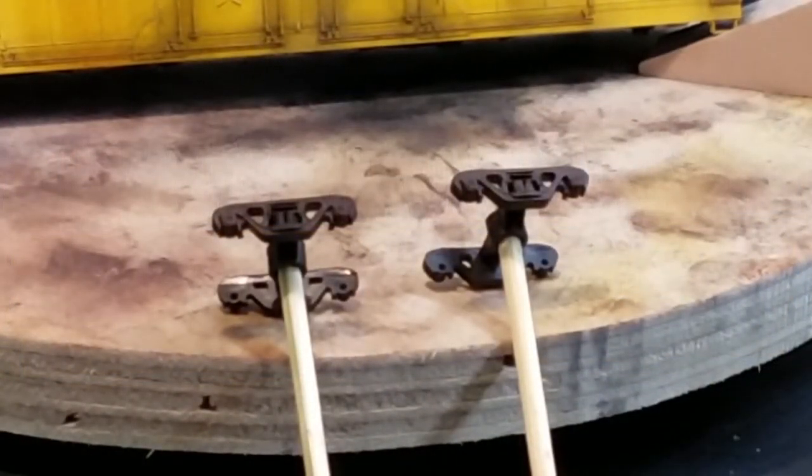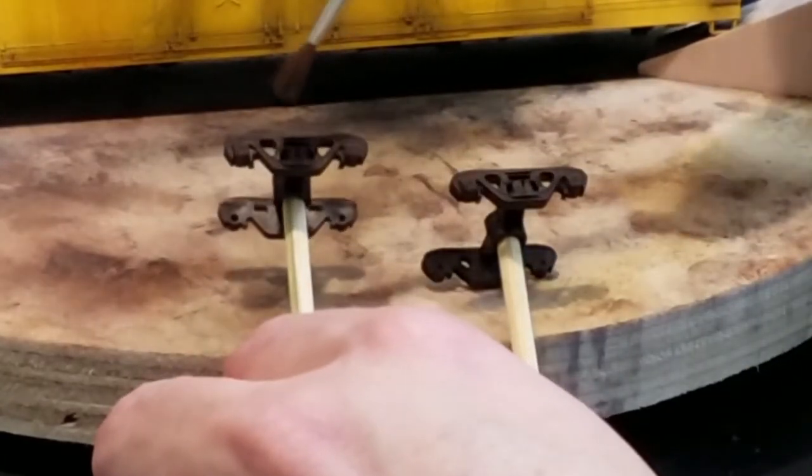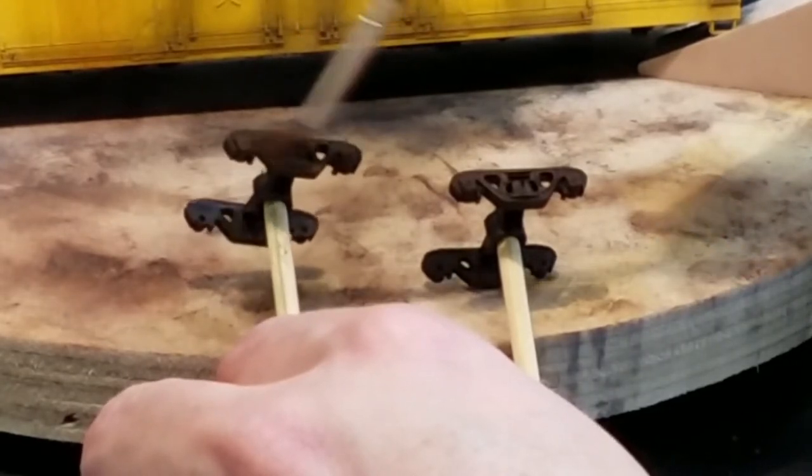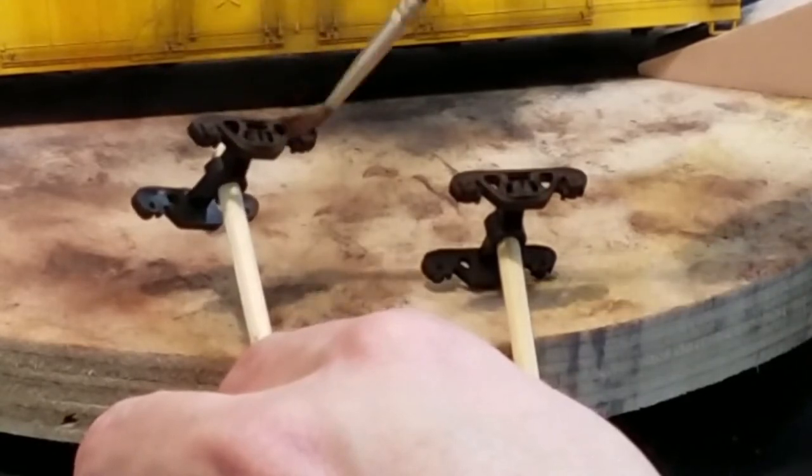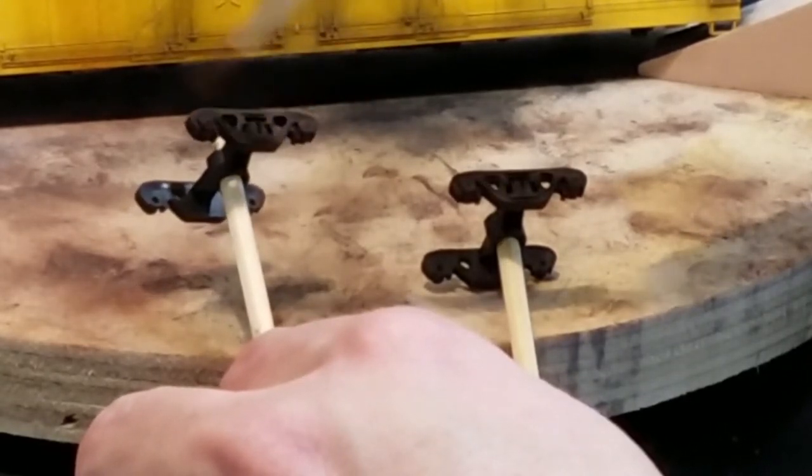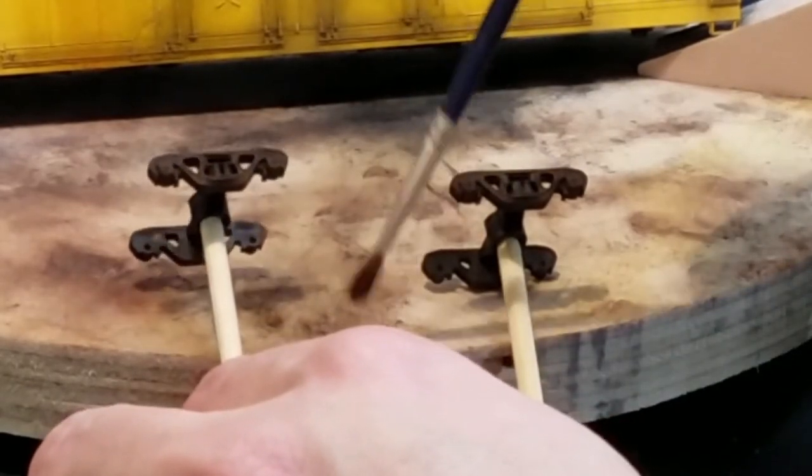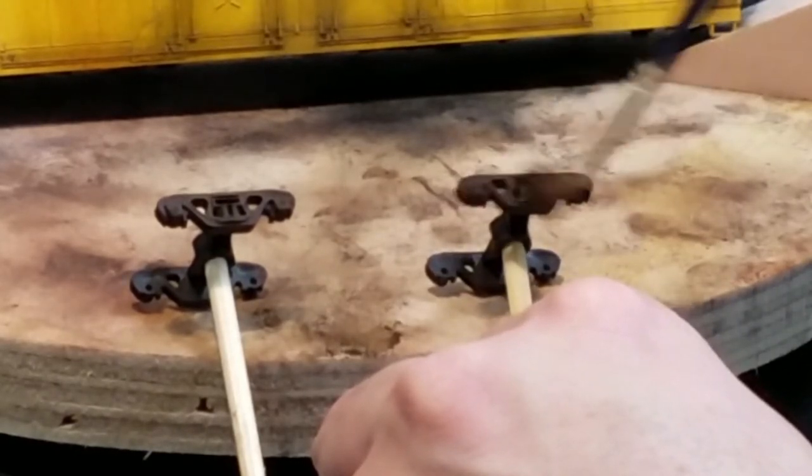Here we're going to put the finishing touches on using my Bragdon weathering powders again and going in with some iron oxide. Really starting to highlight the rustiness of the side frames. Really giving it that impression that these have been used and maintained infrequently.